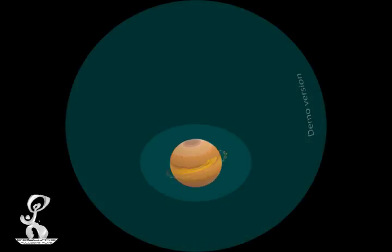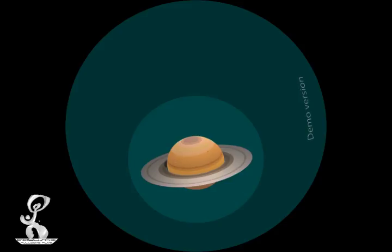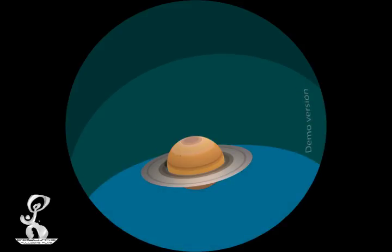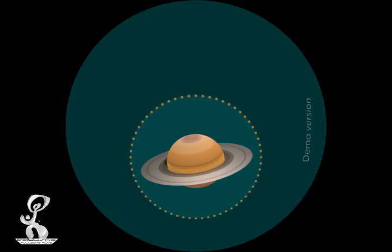The planet with gorgeous rings is Saturn. It is also filled with storms like Jupiter, but it is lighter than water. Someday, if Saturn decides to go for a swim, it will float like a beach ball. Planet Saturn has 62 moons.